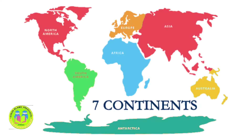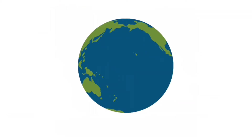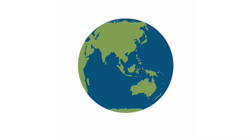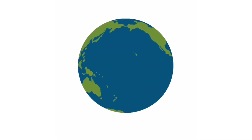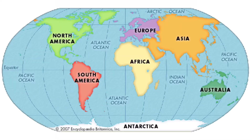Assalamualaikum children. Today we are going to learn about seven continents. This is earth. The shape of earth is sphere. There are seven continents in the world.